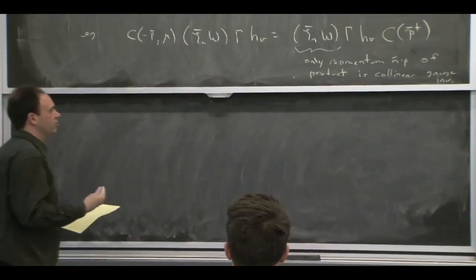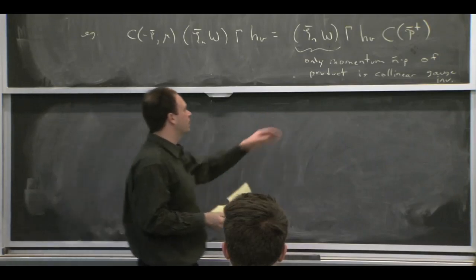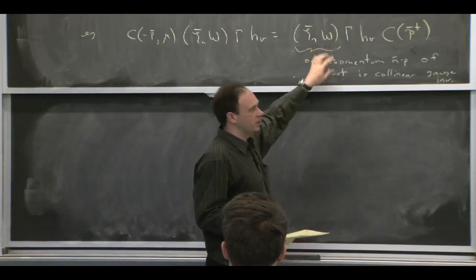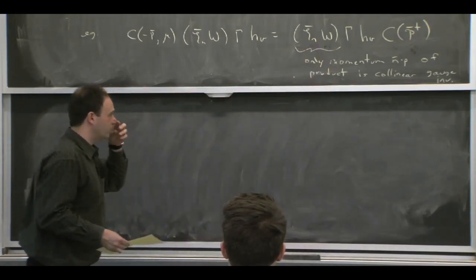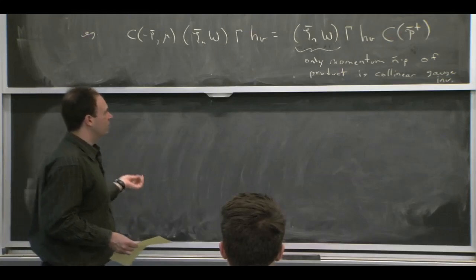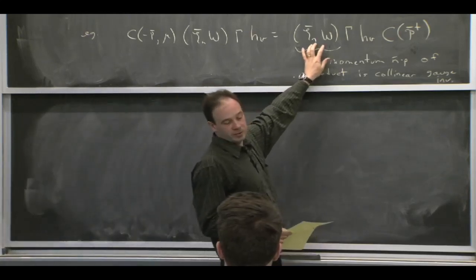OK, so that's actually the general structure that whenever we have these products of fields that are collinear gauge invariant, if we ask what the Wilson coefficient could be a function of, it can be a function of the momentum of those products.